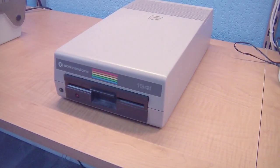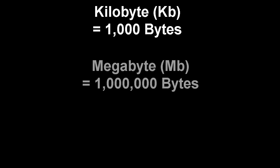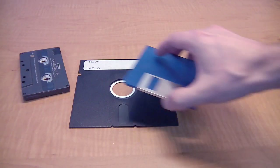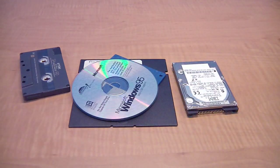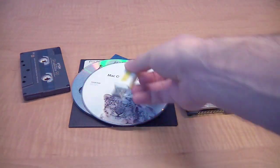Over time memory and storage devices have improved a lot. In the 1980s we measured memory capacity in kilobytes, then in the 1990s we measured it in megabytes, and today we measure in gigabytes. As for storage, we moved to other types of floppy disks, then hard drives, compact disks, DVD, and now flash memory.